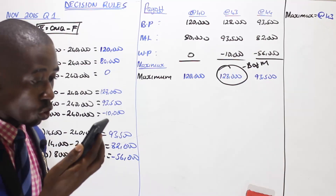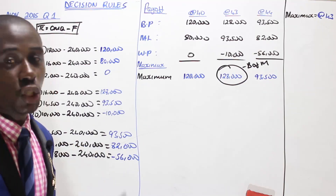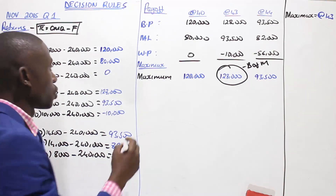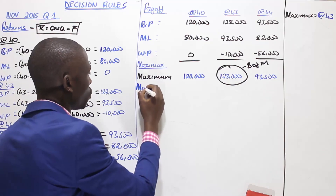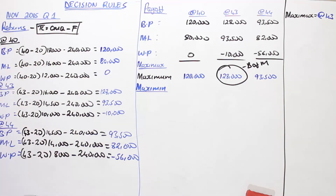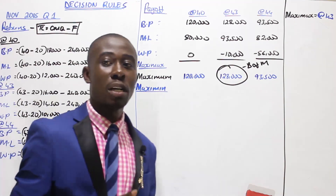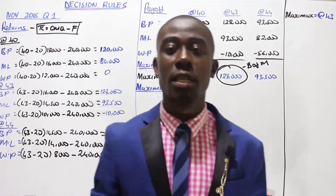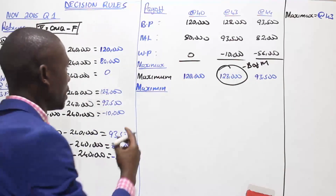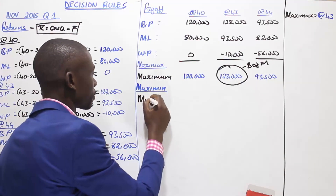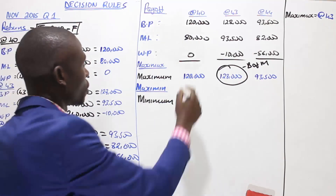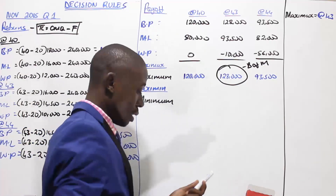The next method we are asked to advise based on is the MaxiMin decision rule. Working out using MaxiMin, the first thing we need to identify is the minimums in our decision alternatives. In our case, at a price of 40, the minimum is 0.